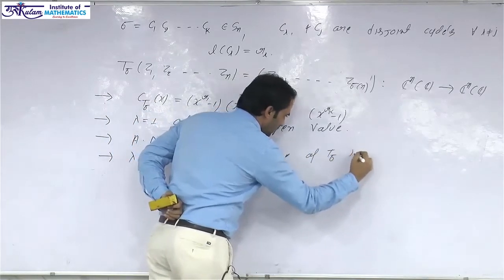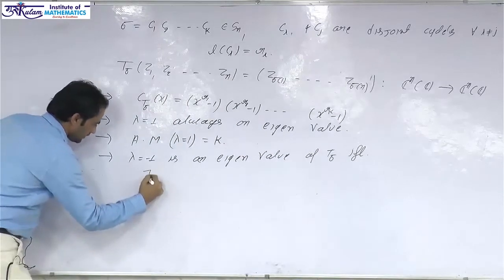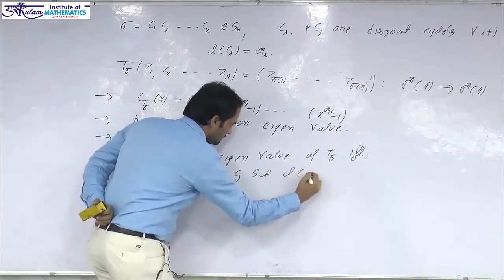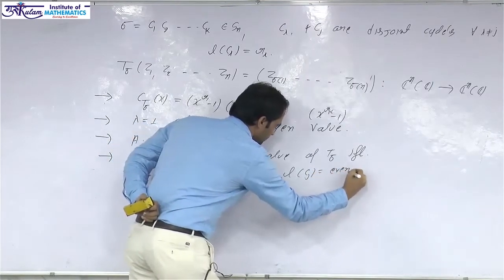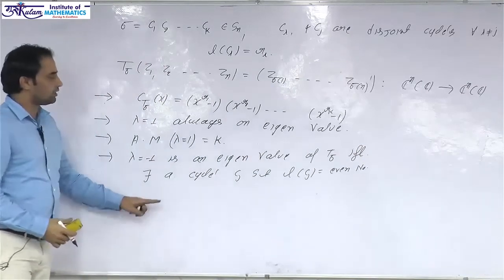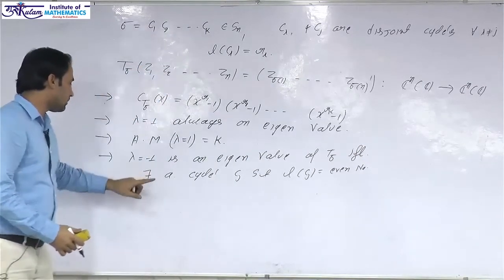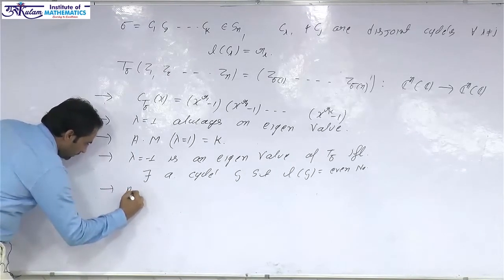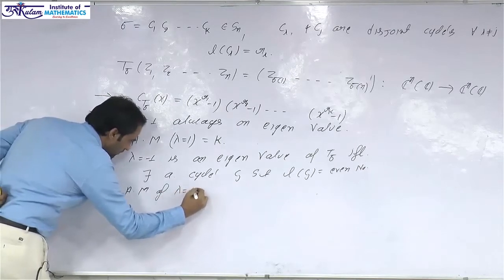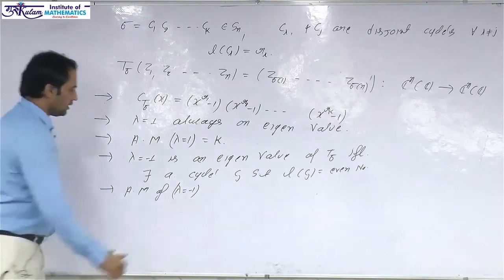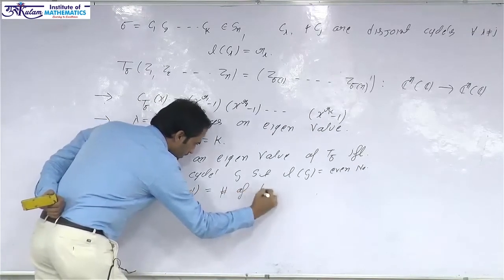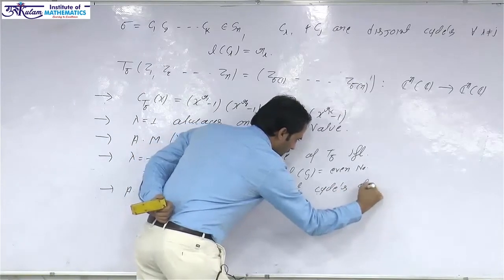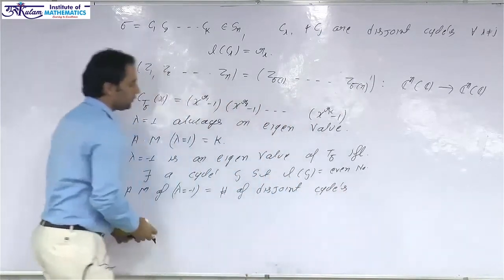λ = -1 is an eigenvalue of T_σ if and only if there exists a cycle cⱼ in the cycle decomposition such that the length of cⱼ is an even number. If in the cycle decomposition there exists a cycle of even length, then T_σ must have eigenvalue -1. The algebraic multiplicity of λ = -1, provided it is an eigenvalue, is the number of disjoint cycles whose length is even.